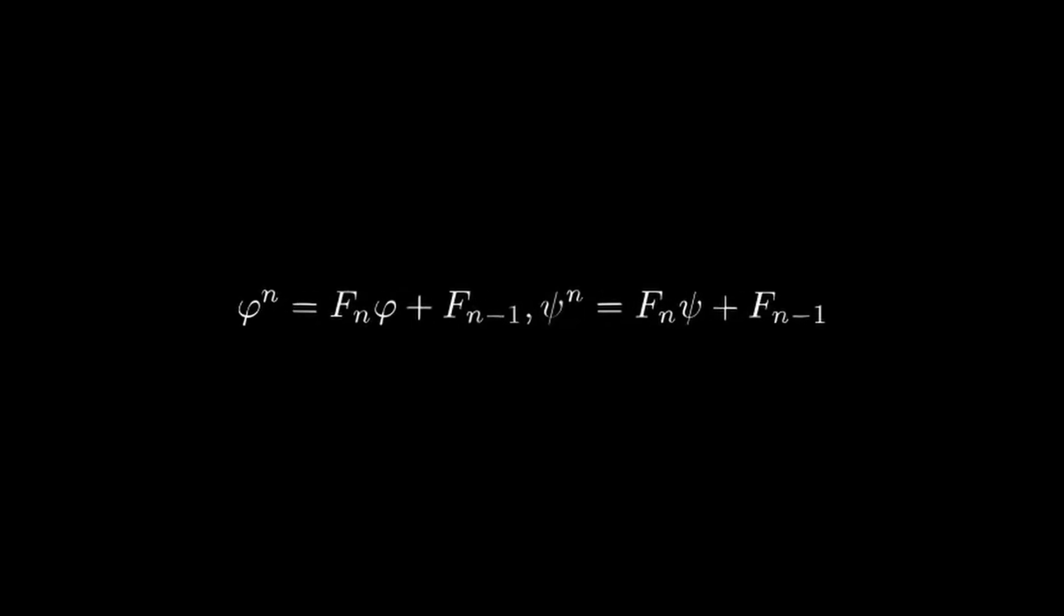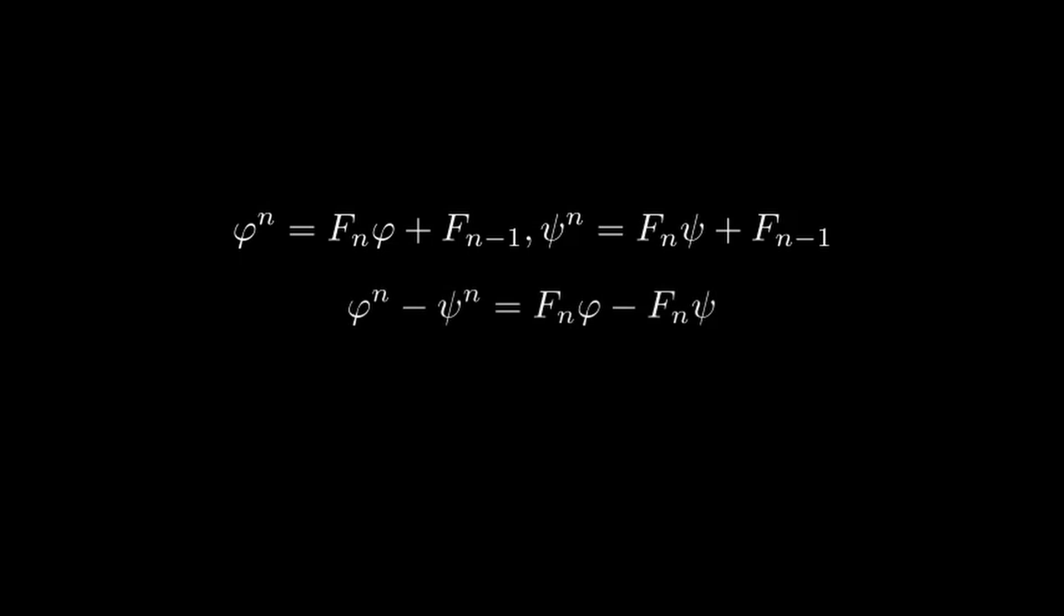This gives us two relations, and therefore we then do simultaneous equations to eliminate Fn minus 1, and we can rearrange this for Fn. This gives us a formula for Fn in terms of powers of phi and psi, exactly what we were looking for.